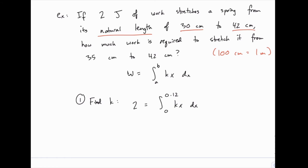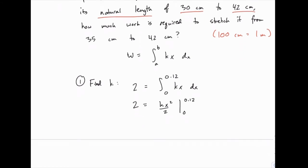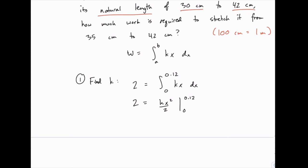We can solve this even with k being unknown. If we integrate we get kx squared over 2, and then we can plug in 0.12 and 0 for x. So we have 1 half times k times 0.12 squared minus 1 half times k times 0 squared.